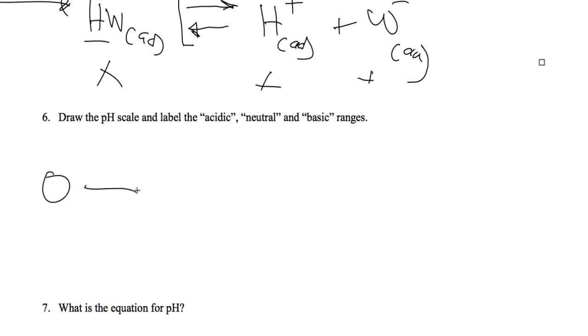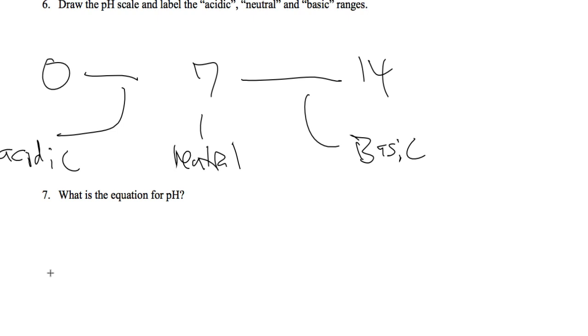pH, 0, 7, 14. This is the neutral range. This is the basic range. And this is the acidic range. The equation for pH is very simple. pH is the negative log of the concentration of the H plus hydrogen ions.